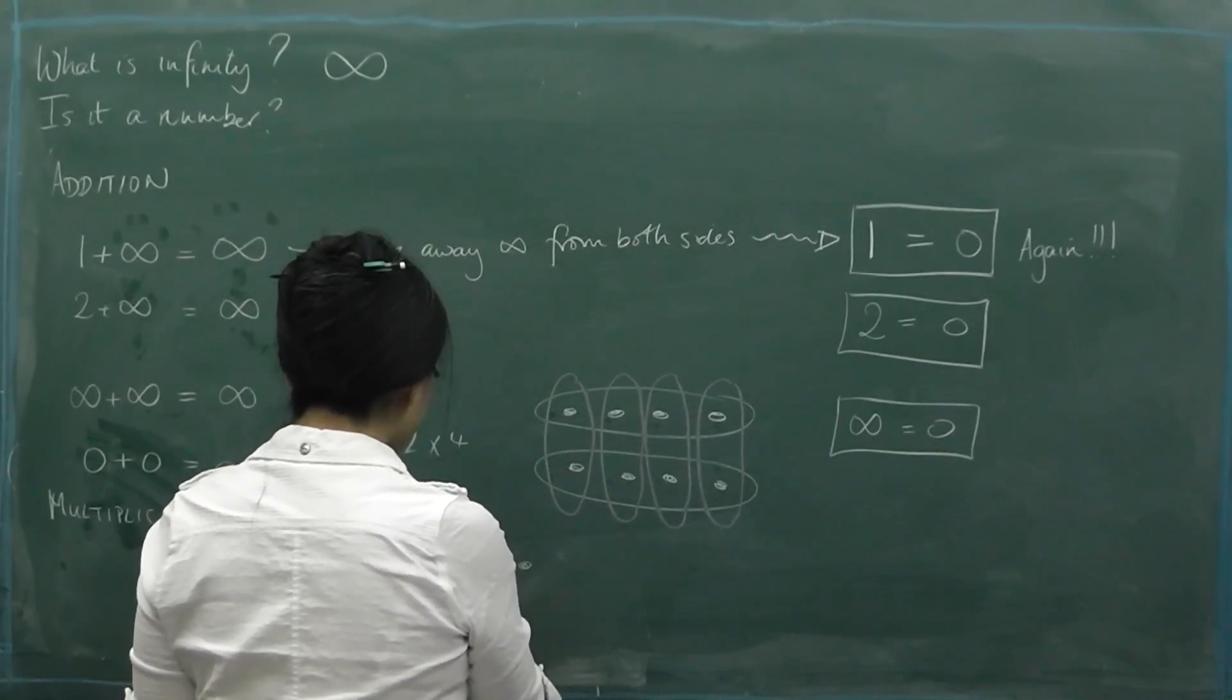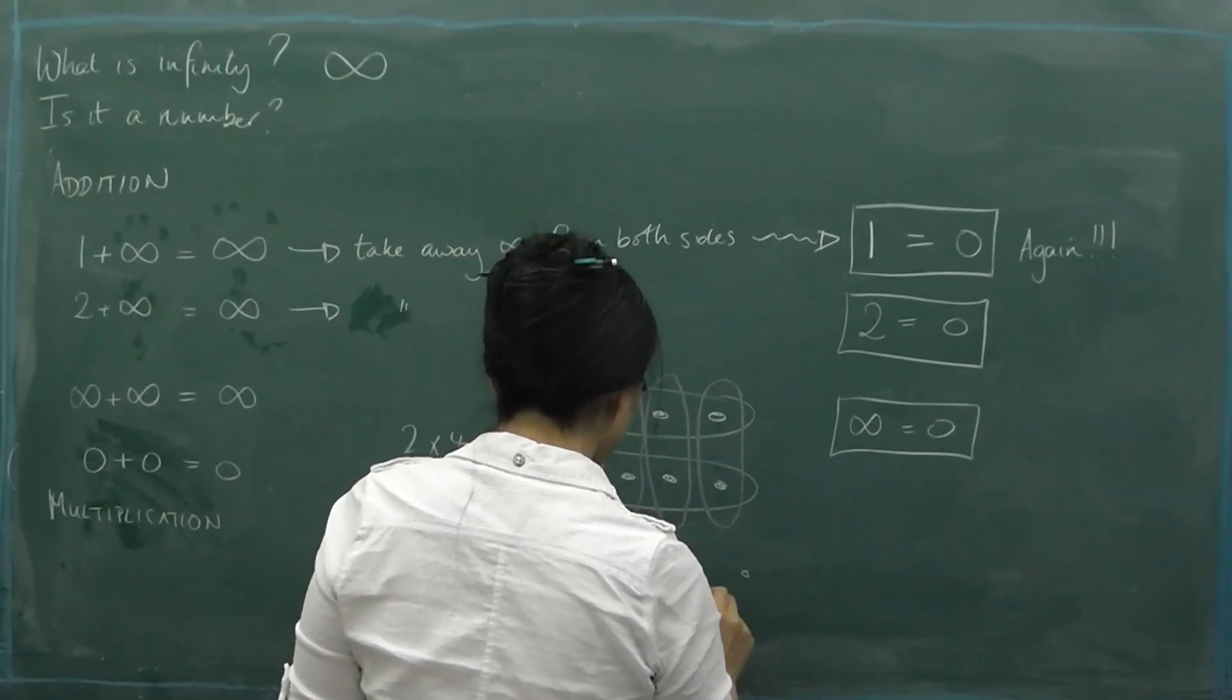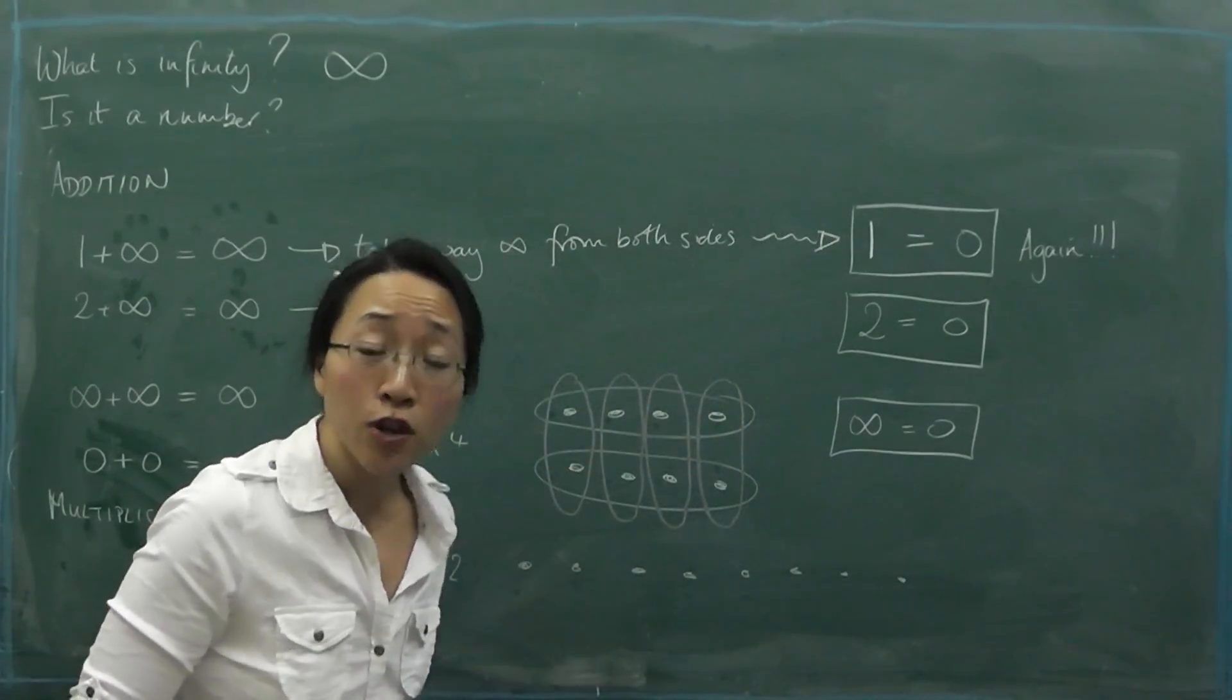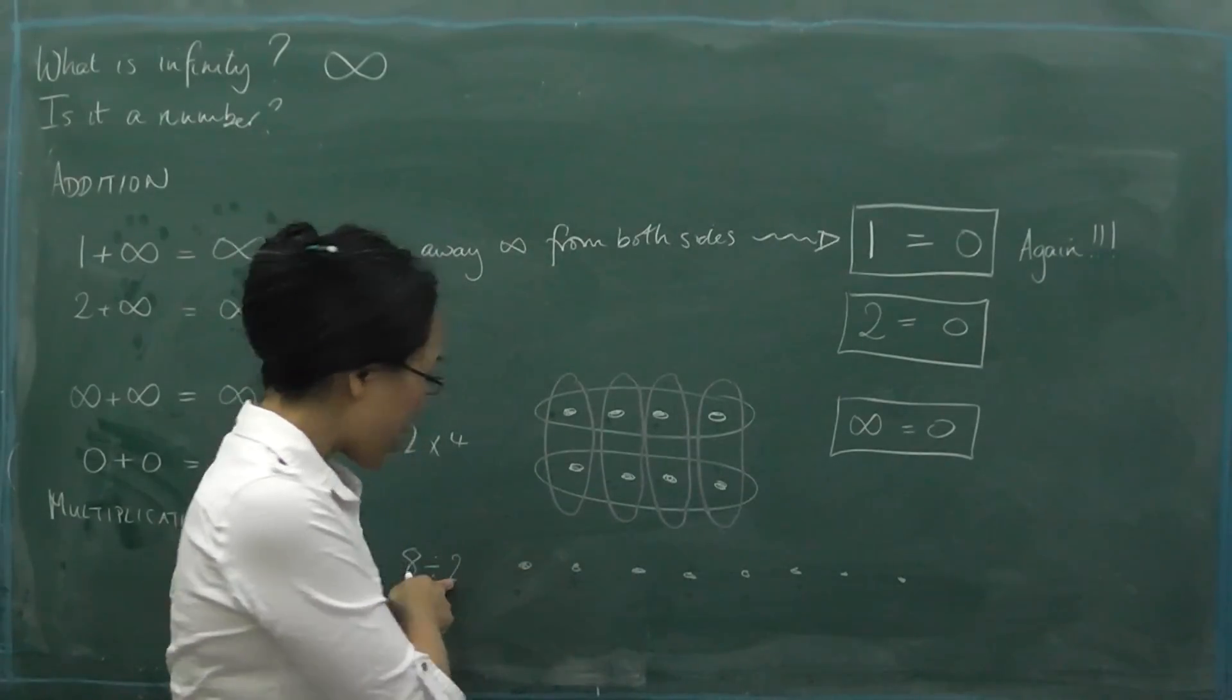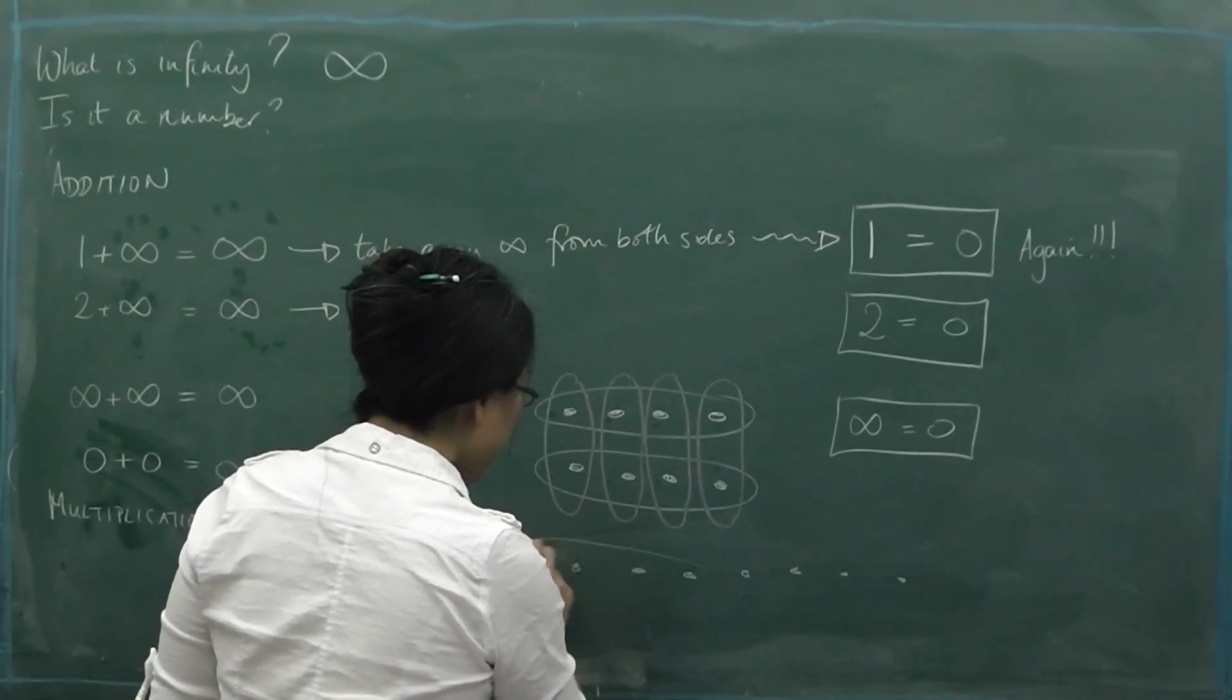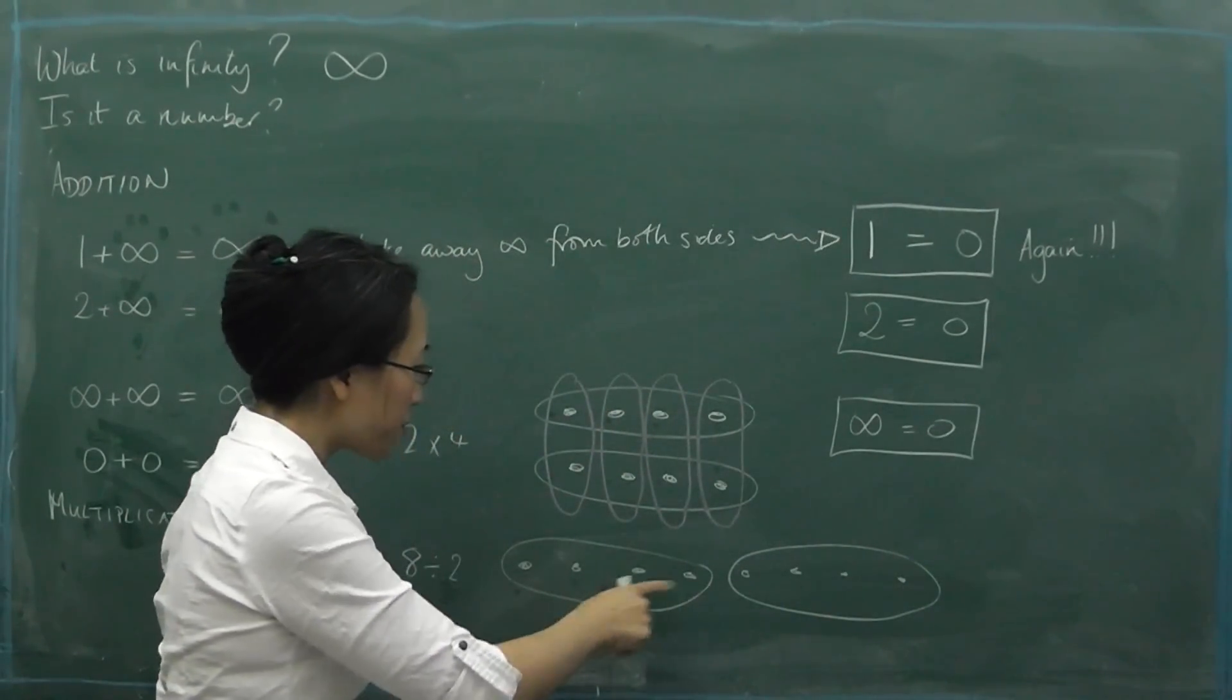If we try and do eight divided by two, you take eight things. One, two, three, four, five. Can't count. One, two, three, four, five, six, seven, eight. And there are two ways you can do division. You can either say, okay, I'm going to split this. I'm going to say, I'm going to divide this into two parts. In which case, I can divide it into two parts, like this. And count how many is in each part. And there's four in each part.